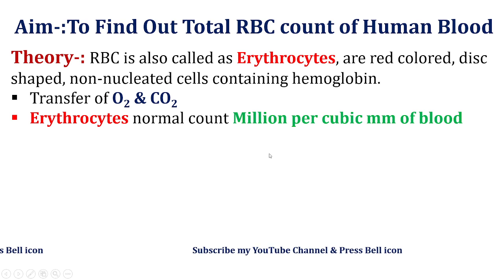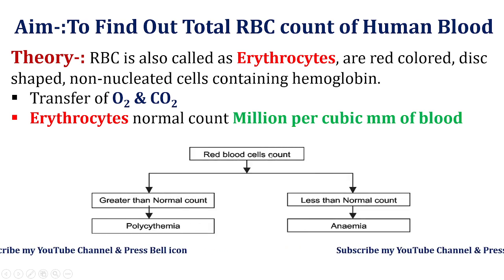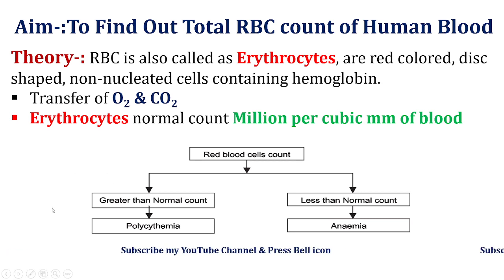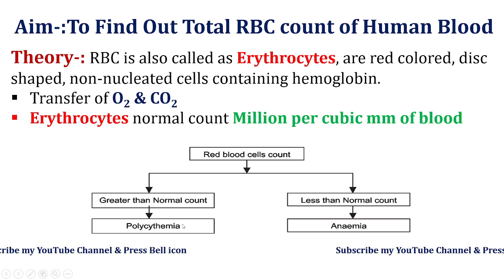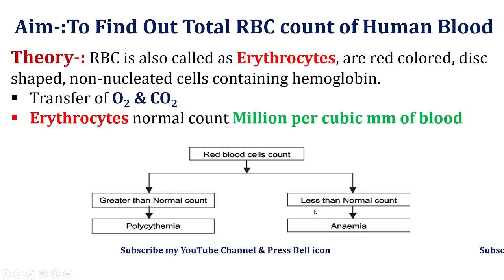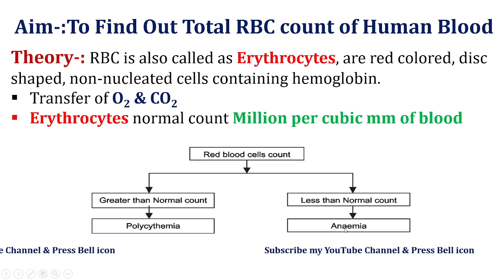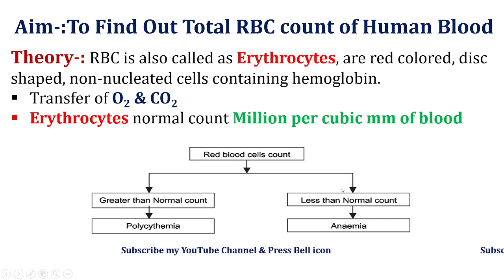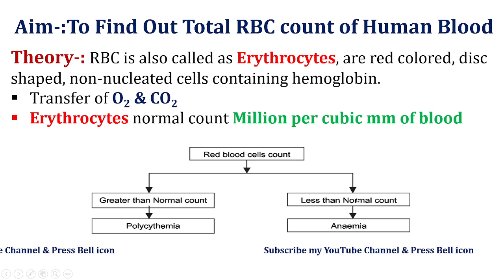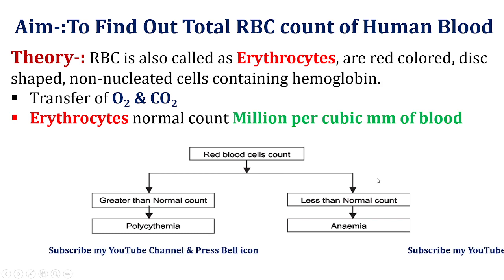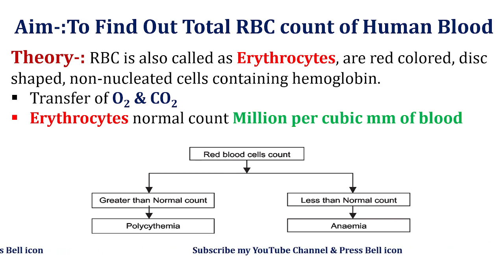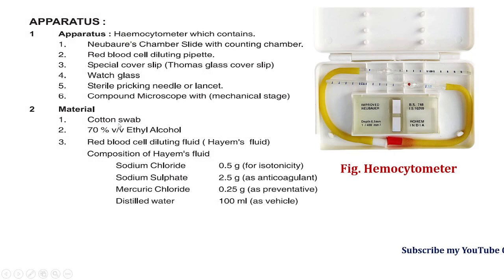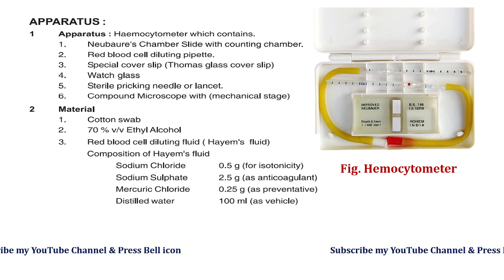The RBC count is in millions. If that count increases or decreases from the normal range, it indicates a condition. Students, pause the video and write these definitions in your notebook — they are important for viva, theory, and MCQ exams. Now let us discuss the apparatus and materials required to record the RBC count in human blood.